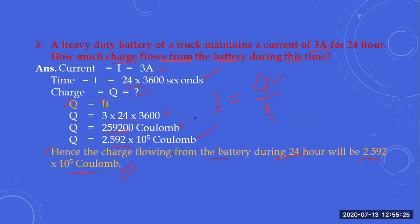To summarize the two points discussed in this class: first, if the amount of current passing through a conductor is given and maintained at a certain value for a given time, and you are asked to calculate how many charges have passed through the conductor, you use the definition of current: I = Q / T, and rearrange to find Q = I × T.